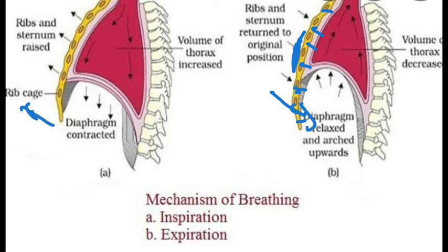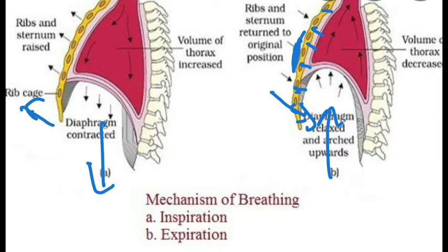Relaxation of the diaphragm and the intercostal muscles returns the diaphragm and sternum to their normal position, reducing the thoracic volume and thereby the pulmonary volume. This leads to an increase in pulmonary pressure to slightly above atmospheric pressure, causing expiration.